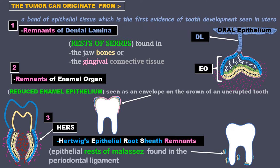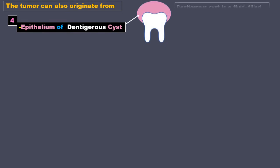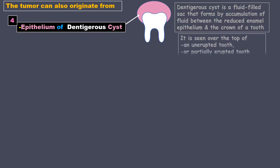Apart from these, the tumor can also originate from the epithelium of a dentigerous cyst — a fluid-filled sac that forms by accumulation of fluid between the reduced enamel epithelium and the crown of a tooth. It is seen over the top of an unerupted or partially erupted tooth.